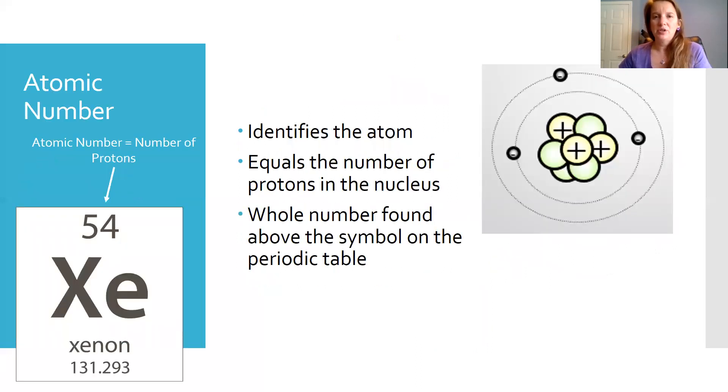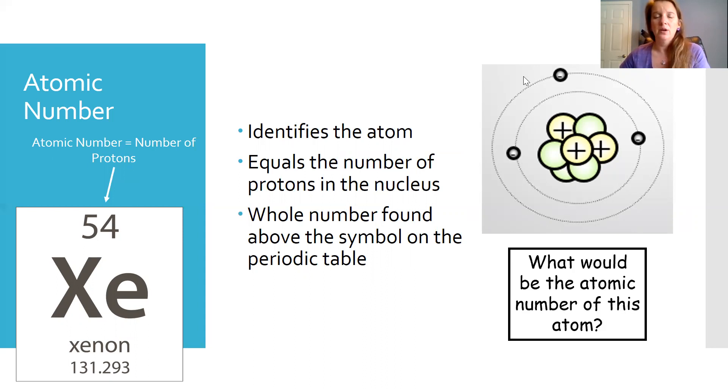So the atomic number, we mentioned before that the atomic number is found on the periodic table. It's the whole number found on the periodic table. And this is going to tell us how many protons are in that atom. So the atomic number is going to tell us specifically which atom we're talking about. So when we look at this picture over here, and I ask you, well, what atom is this? What element is this talking about?